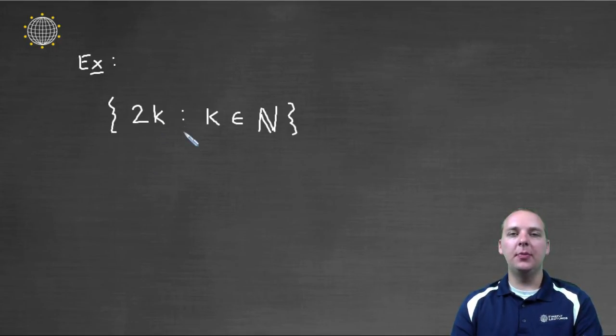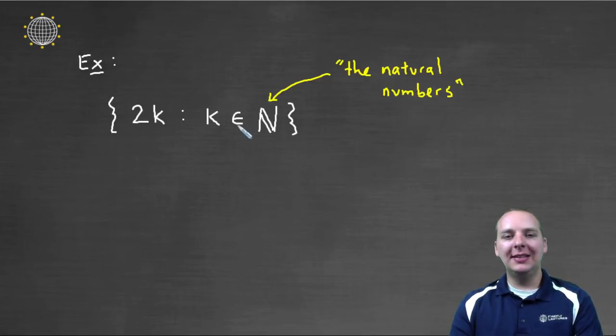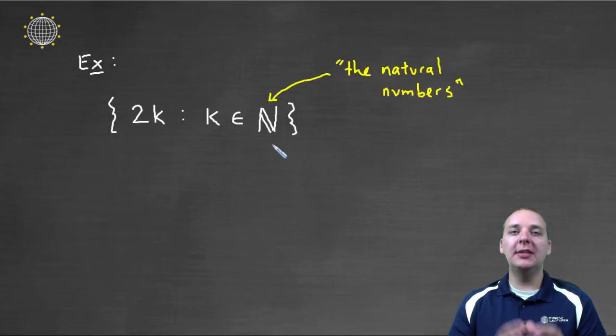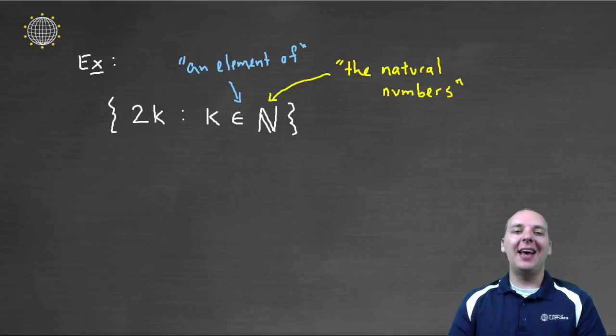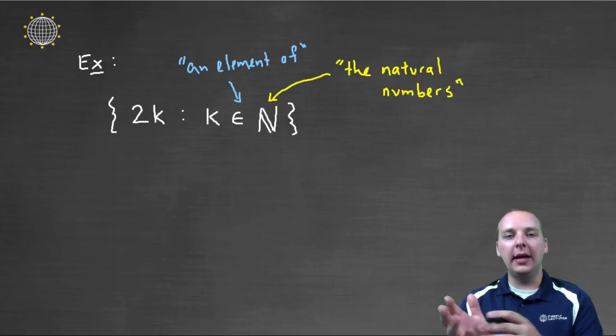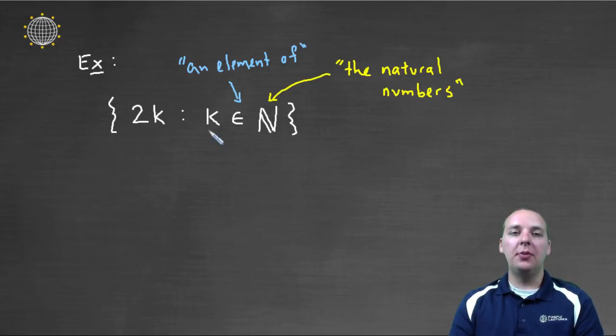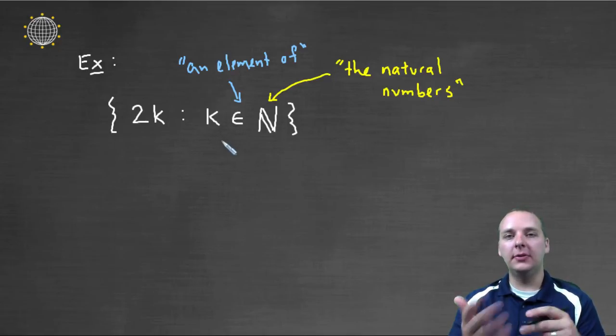Here's our last example using set builder notation. Here I want to point out a couple of notations that you might see. The first one is this bold capital N here. We're going to talk more about this in the next video. But sometimes we use capital bold letters to designate certain types of sets of numbers. And so in this case the capital N stands for the natural numbers. Now what about this weird kind of curved arrow thing here? That in English you could say the phrase is an element of blank. And so here we were looking for all the K's that are an element of the natural numbers. So that would be one, two, three, four, five, six, seven, eight, nine, ten, etcetera.